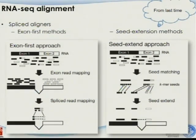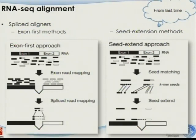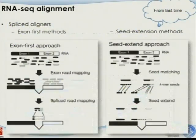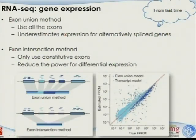For splicing alignment, there are two general approaches. The first is the exon-first approach: align reads to the genome, handle exonic reads first, then use strategies to match the remaining junction reads where exons are expressed. The second, less popular approach is seed extension: split reads into smaller windows, map each window, and join them back together. The most popular tool for RNA-seq alignment is TopHat, which uses the exon-first approach.